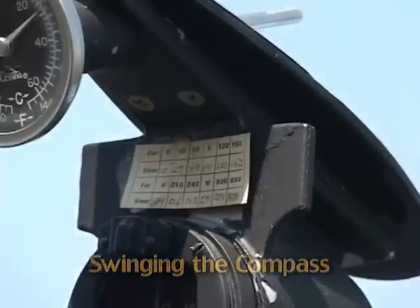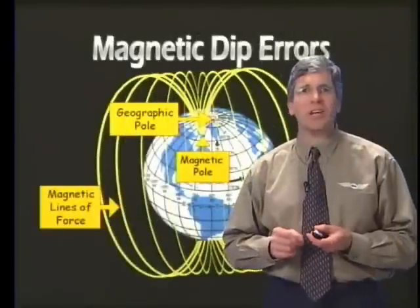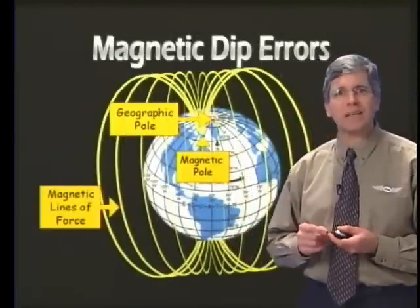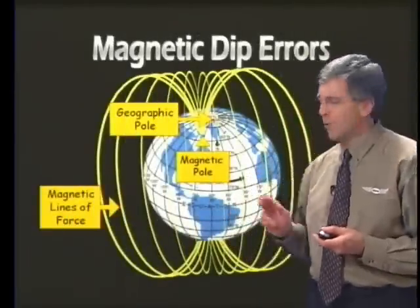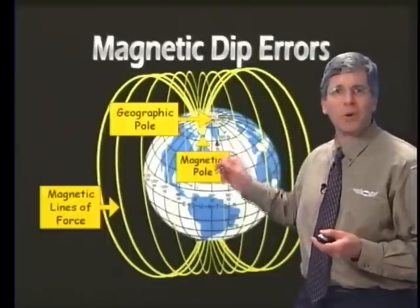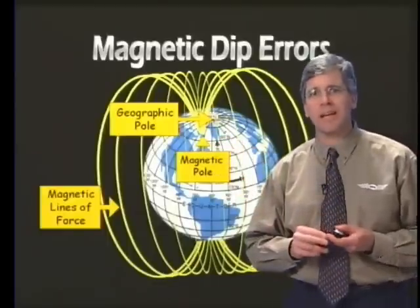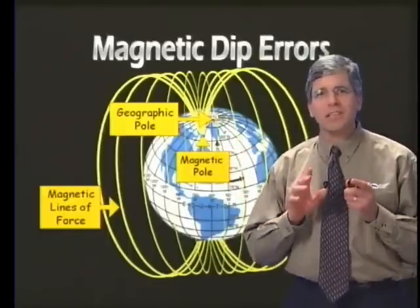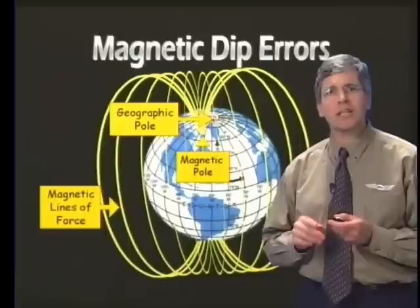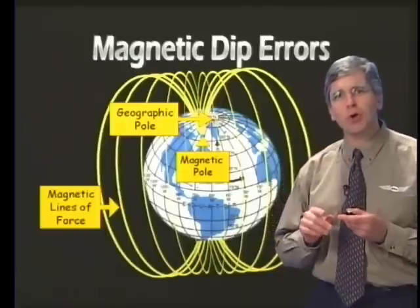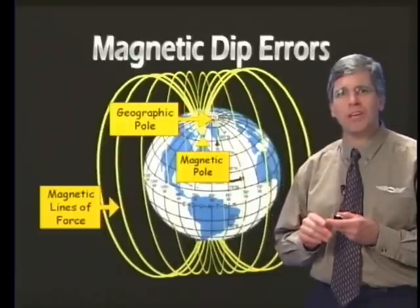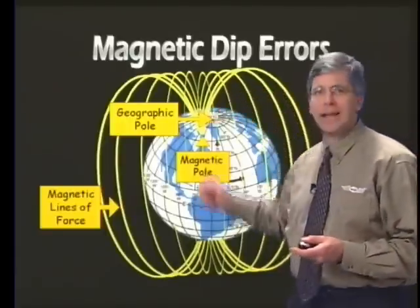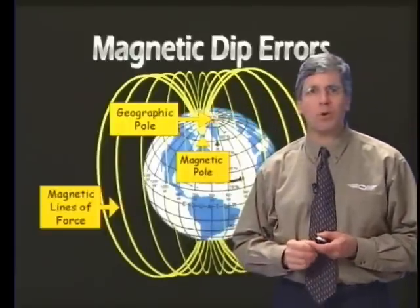Magnetic Dip Error. This error is caused by the compass magnets pointing downward as they align with the Earth's magnetic field. This downward pointing is caused by the vertical component of the field and is greatest near the magnetic north poles.